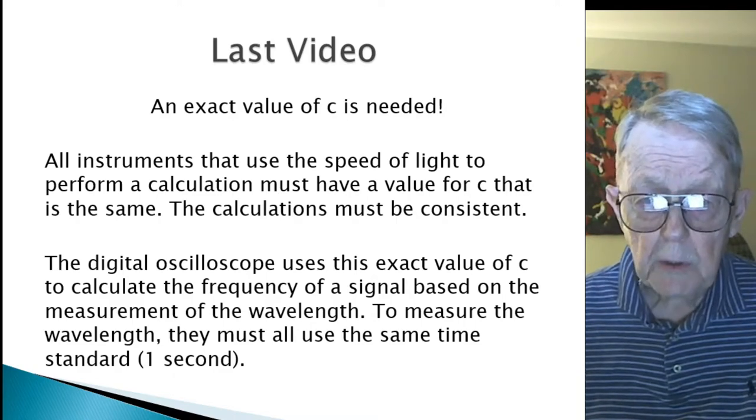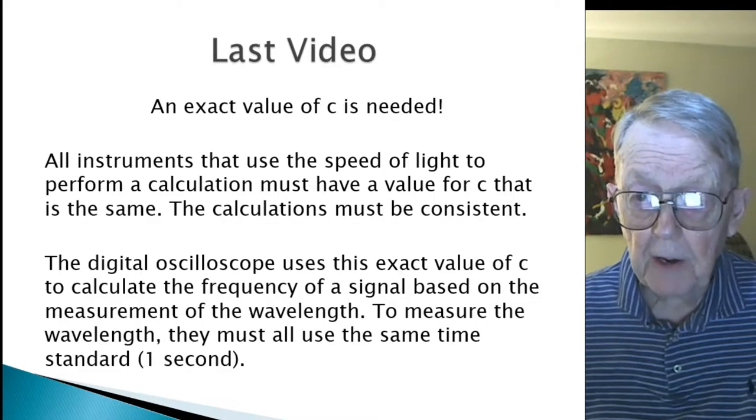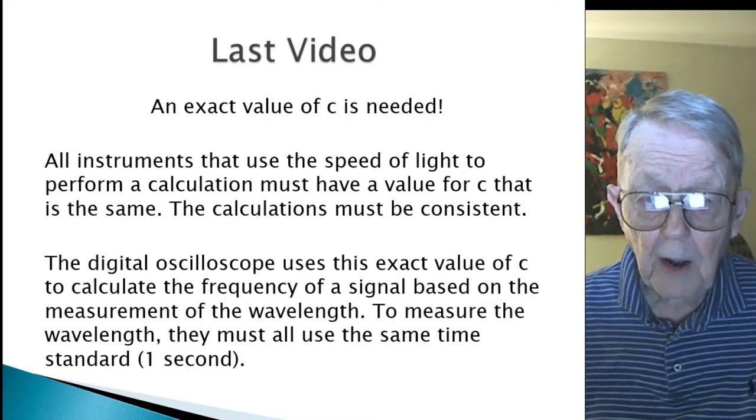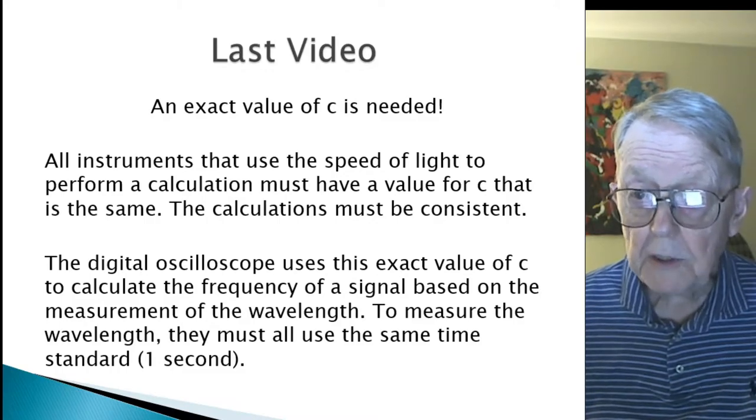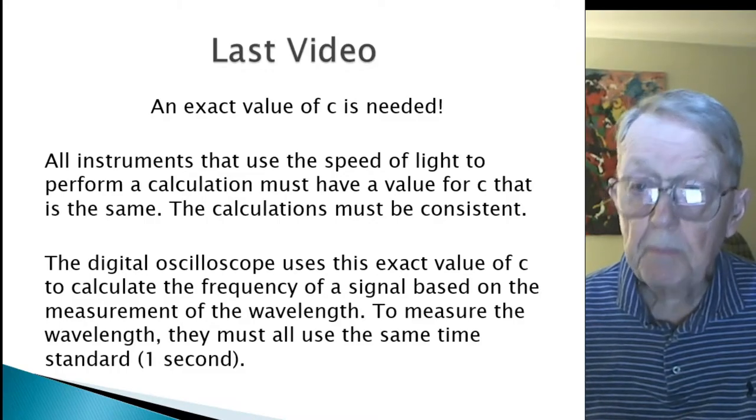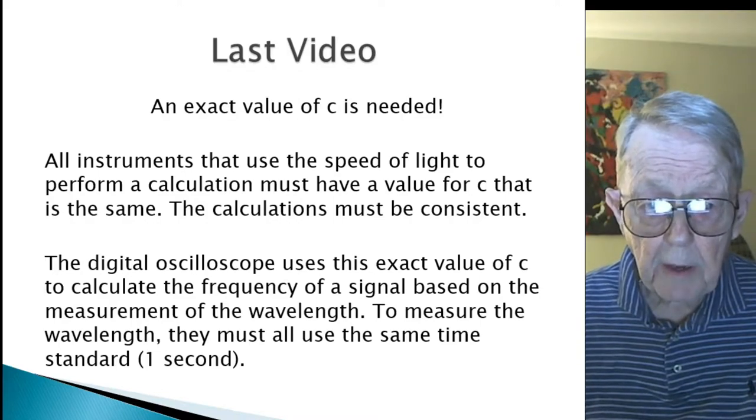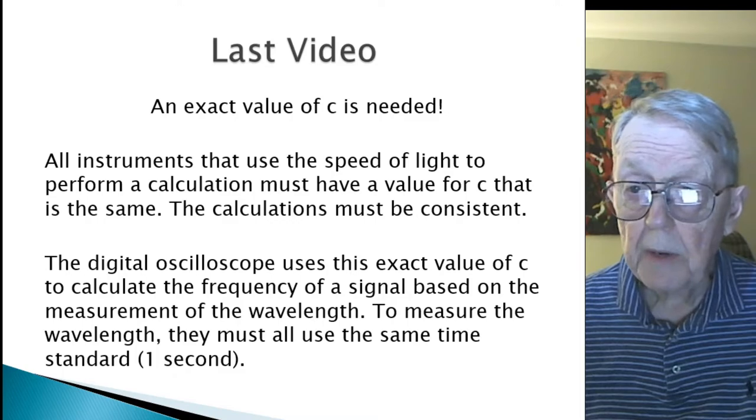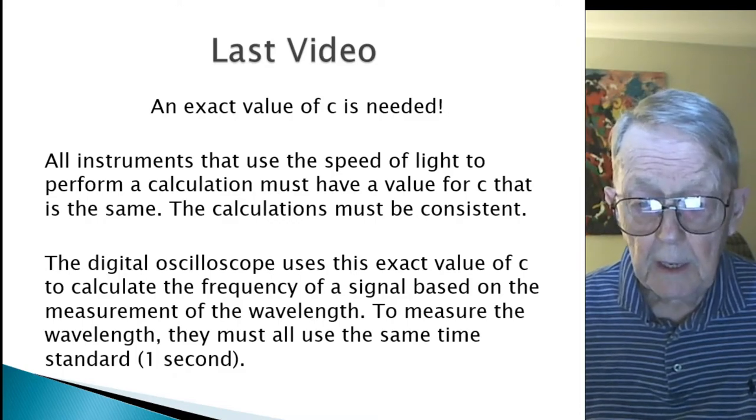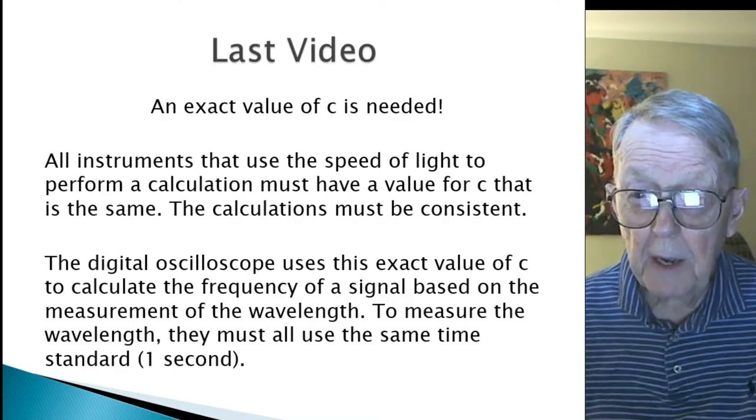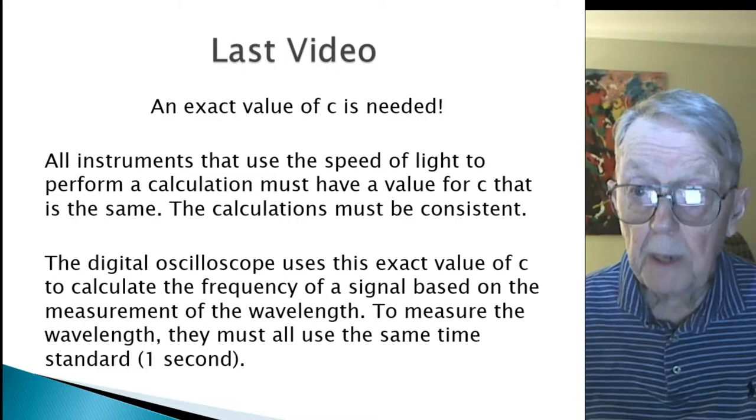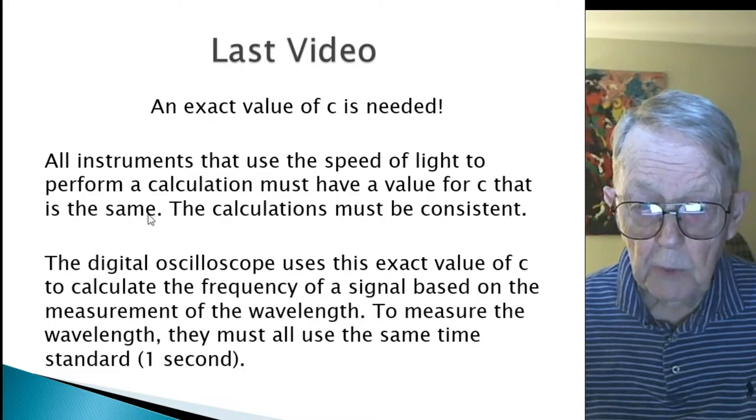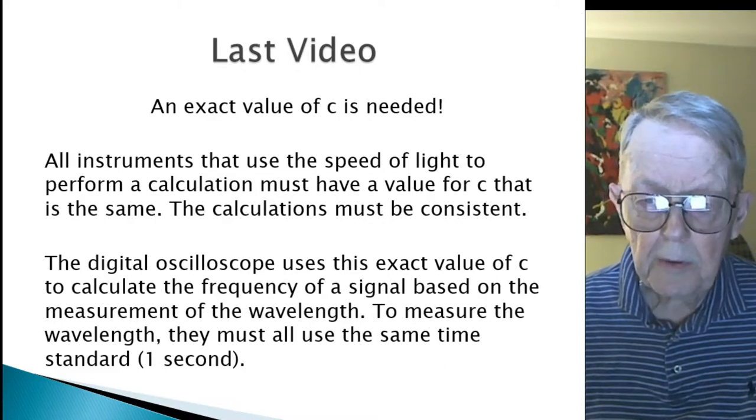For example, a digital oscilloscope uses the exact value, or uses the value of c, presumably this precise exact value, to calculate the frequency of a signal based on the measurement of the wavelength with time. To measure the wavelength, they all must use the same standard for c and the same standard for the second, and that way they're correlated. So there is a reason, even though the value itself may not represent what's really happening. When you measure with an oscilloscope, it may not be that value, but at least the instruments will be comparable. You can compare them.